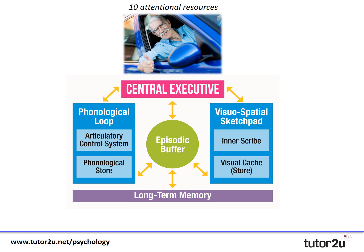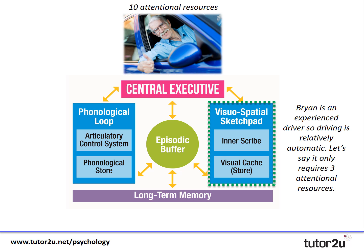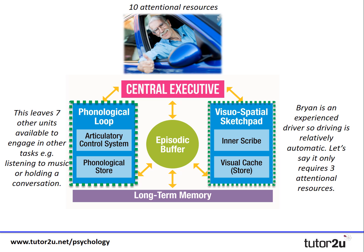So Brian is an experienced driver and therefore driving, which is of course a visual and spatial based task, will be relatively easy for him. Consequently, the visuospatial sketchpad will not place much demand for resources on the central executive. So let's say the visuospatial sketchpad only requires three attentional resources of Brian's available 10. This means that Brian has seven other resources left for other tasks, which is why he's able to use the phonological loop and engage in other tasks easily.